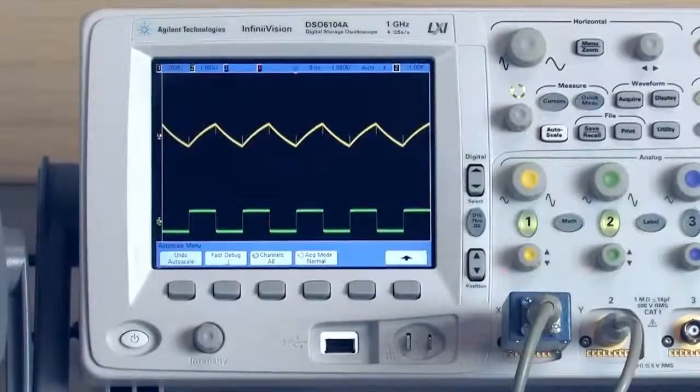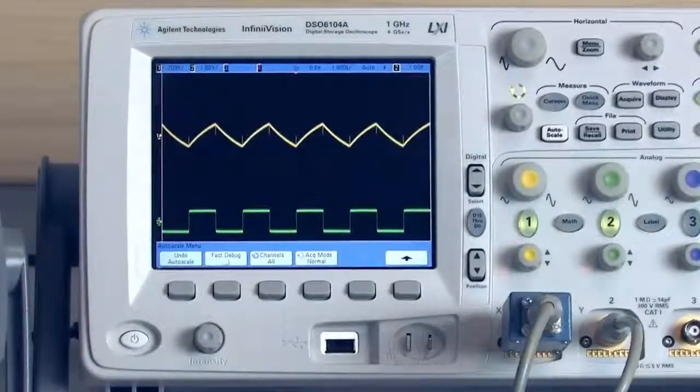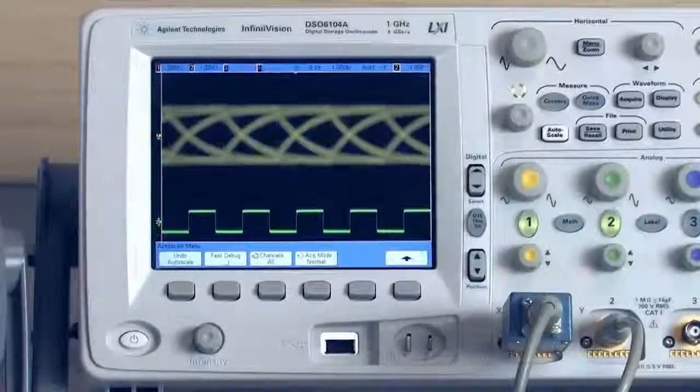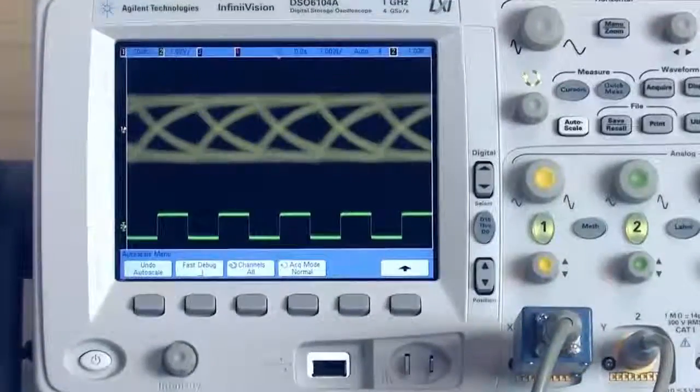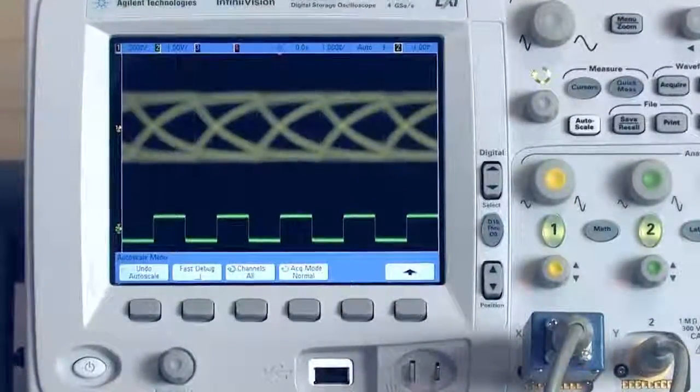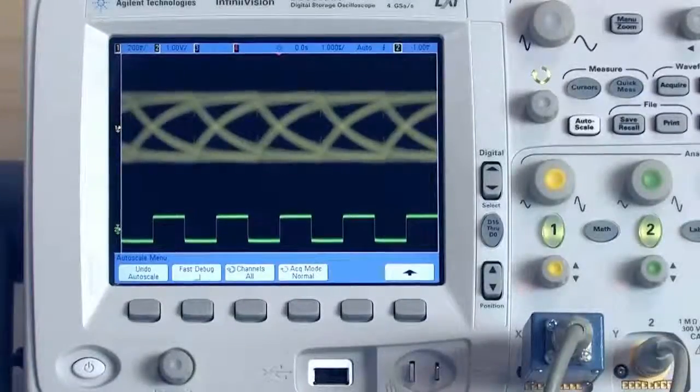When I switch the generator to the PRBS waveform function, now we're seeing a very long sequence of data, a maximal length sequence of data, being sent through this circuit and displayed on the eye diagram on the oscilloscope.